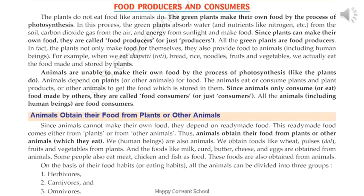Now we learn what are food producers and consumers. Green plants make their own food by the process of photosynthesis. Since plants can produce their own food, they are called food producers. On the other hand, animals are unable to make their own food by photosynthesis. They depend on plants or other animals for food. Since animals only consume food made by others, they are called food consumers. Even we human beings are called food consumers.